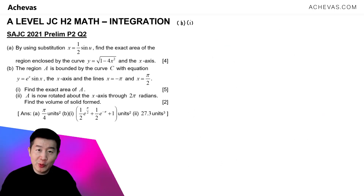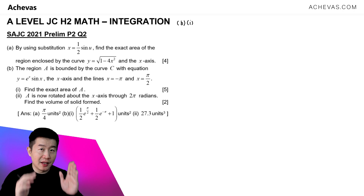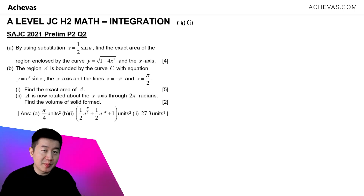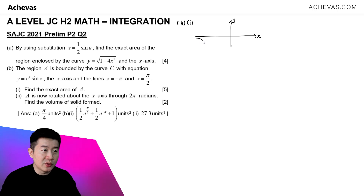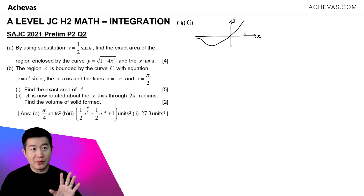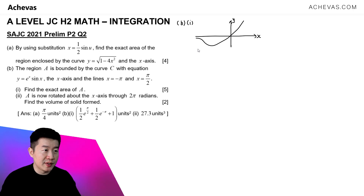In part B, we are going to use integration again to find the exact area of a region. This time it is the region bounded by the curve y = eˣsin(x), the x-axis, and two vertical lines: x = -π and x = π/2. Just like before, the first thing we want to do is sketch the graph. Based on what I have on my graphing calculator, the graph looks something like this — there's a turning point, then it curls up. I'm sketching only the part of our concern.